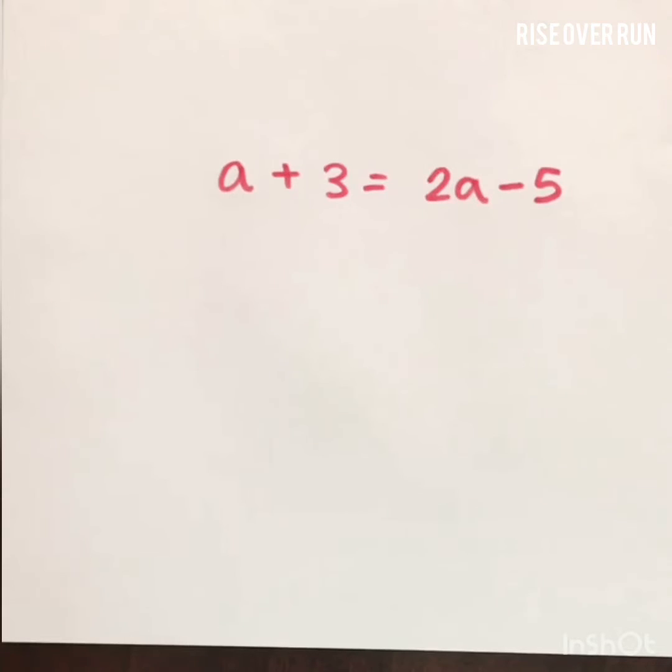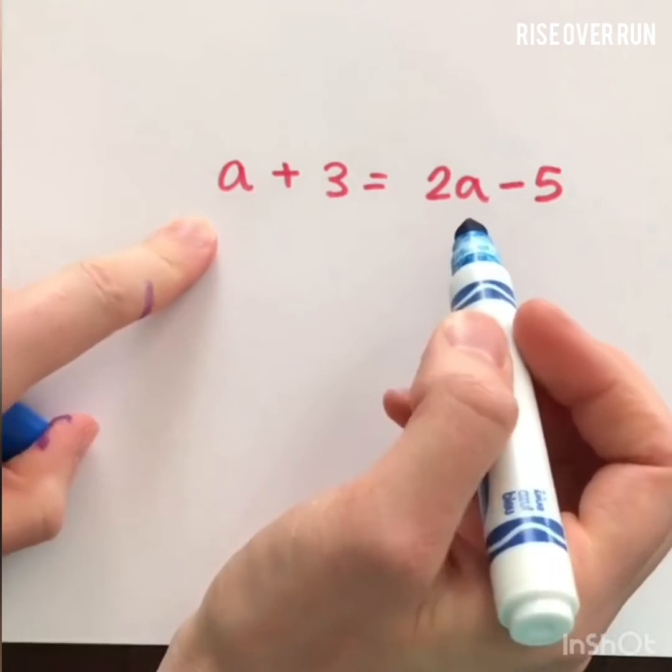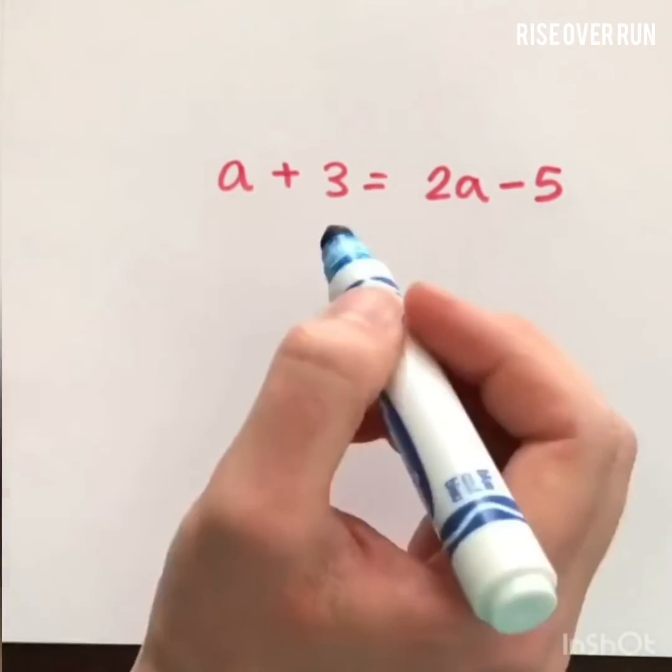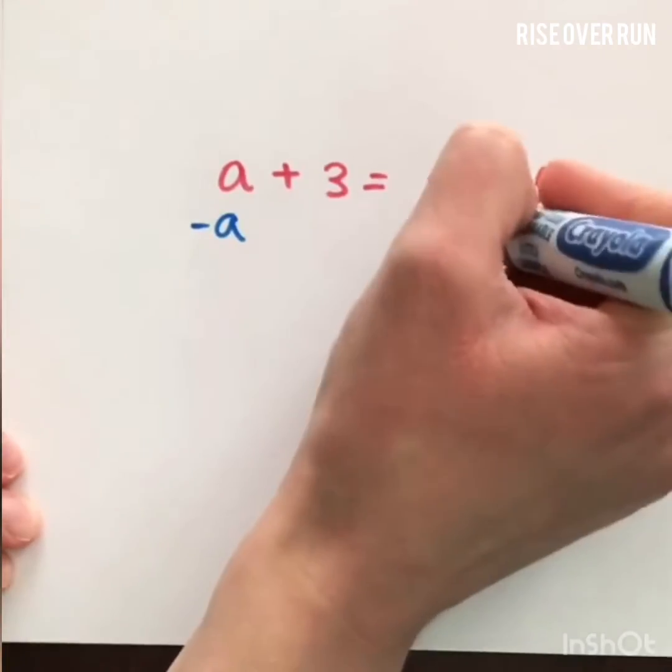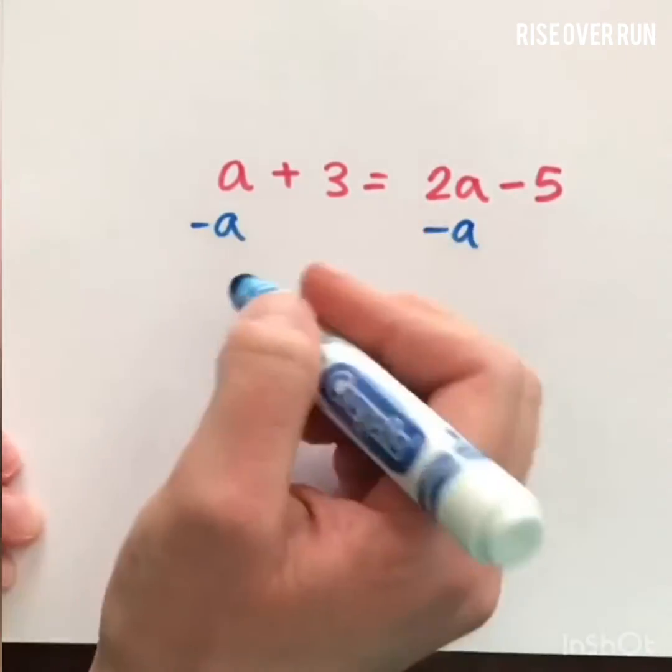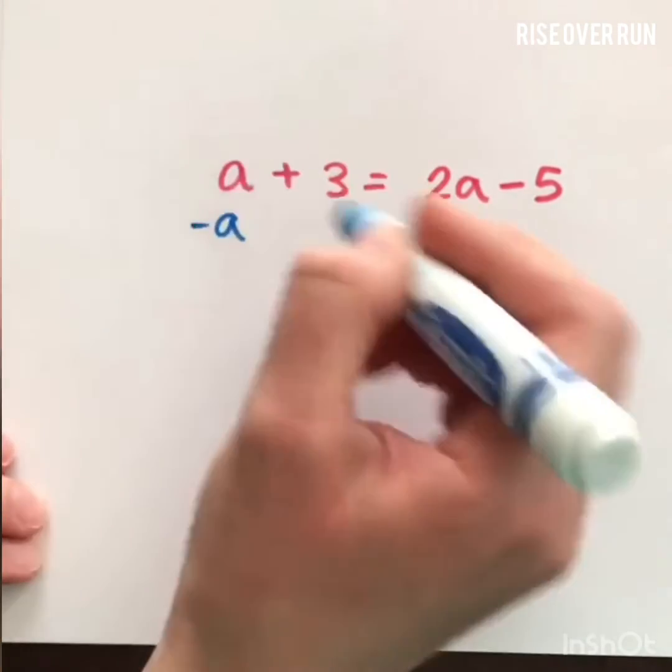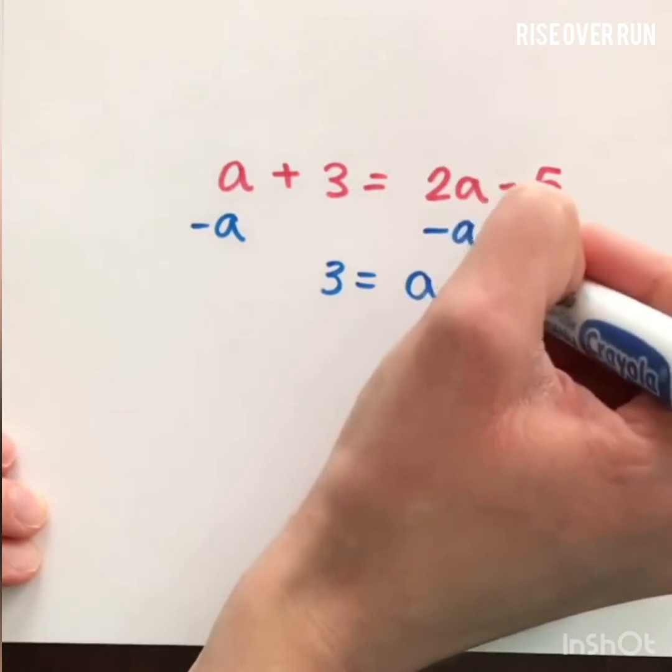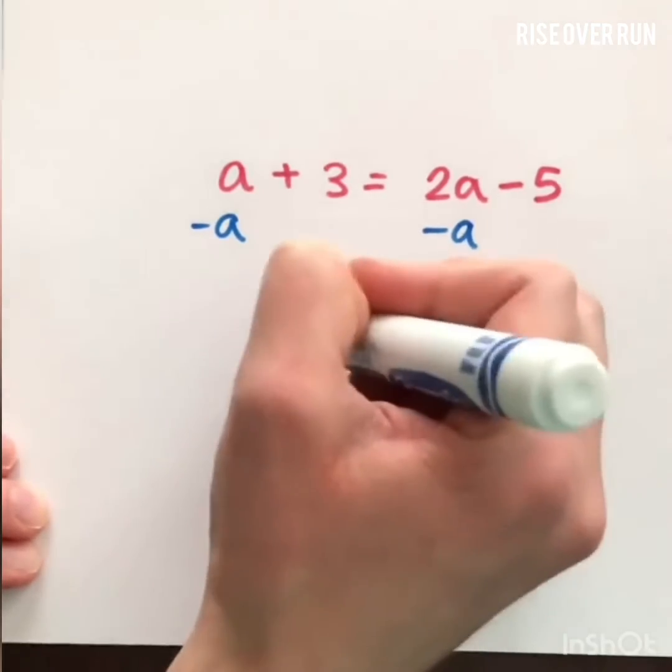Let's look at variables on both sides. That just means you've got a variable on both sides of the equal sign. What you're trying to do is get variables moved to one side and numbers or constants moved to the other. In this case, I could move this a by taking it away from both sides. That way we're still keeping it balanced. Subtract an a here so that all I have is a 3. 2a minus a is a, and then I can solve this as I would any other equation.